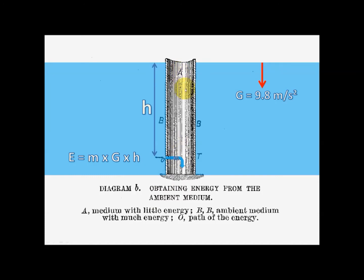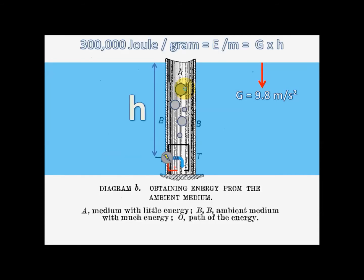But things get interesting when the height of the tube is really long. Conceivably, if you increase the height of the tube to make it very, very long, you would have so much energy in the mass of water flowing through the orifice of the tube. When you get to a height that gives the potential energy of the mass of water flowing into the tube roughly 300,000 joules per gram, that's enough to electrolyze the water.